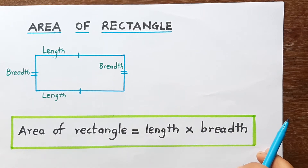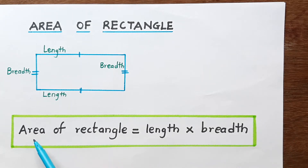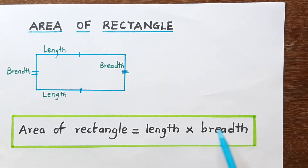Now, let us look at the area of a rectangle. The formula is not hard — it is very simple. Area of rectangle is equal to length into breadth.